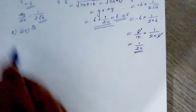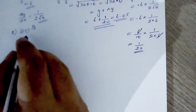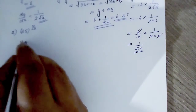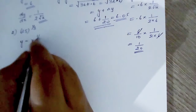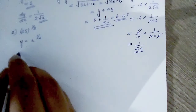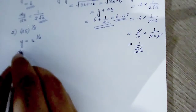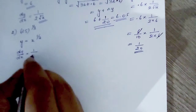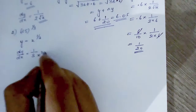Now let us do cube root of 25. Let y is equal to x raised to 1 by 3. Then dy by dx equals 1 by 3 x raised to negative 2 by 3.